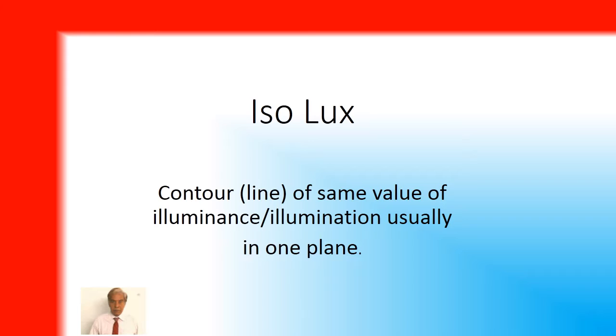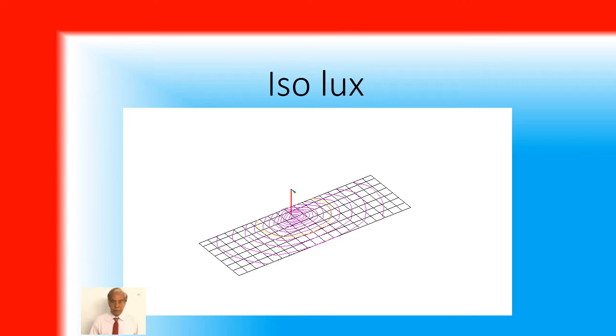Isolux diagram: the lux level when plotted in terms of the same values of illumination, usually in one plane, is called isolux. For example, in this diagram you see a street light on a road which is surrounded by elliptical shapes of isolux diagram. Each line has a lux value which is fixed wherever you go on that line.